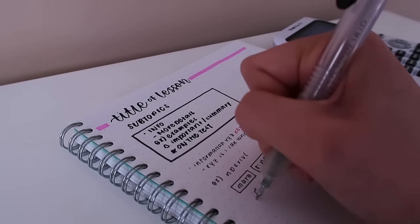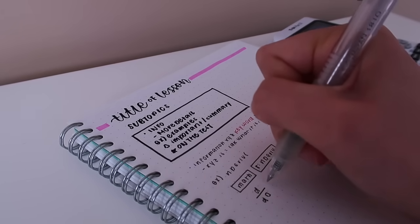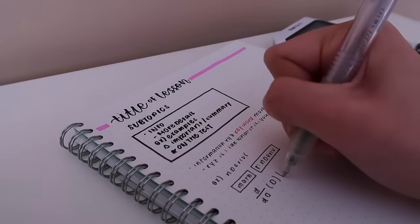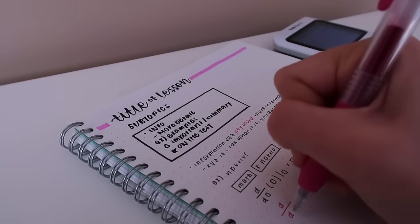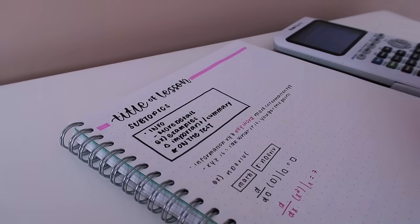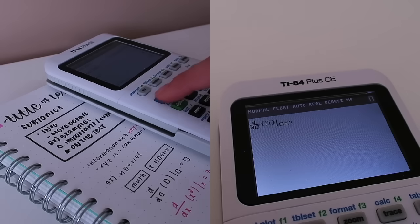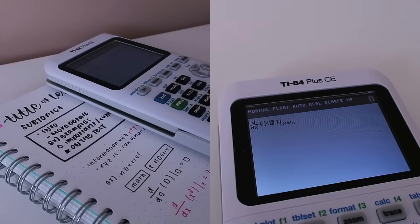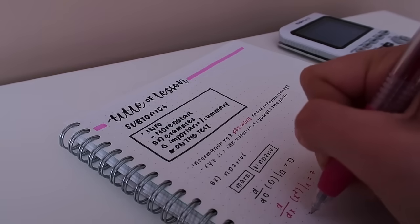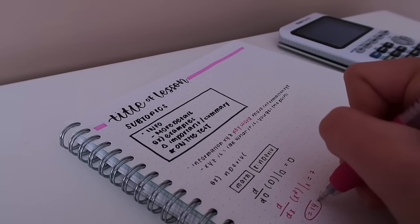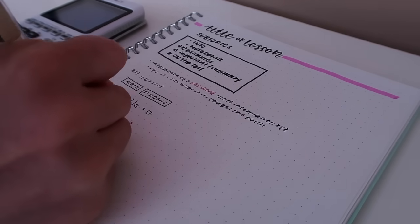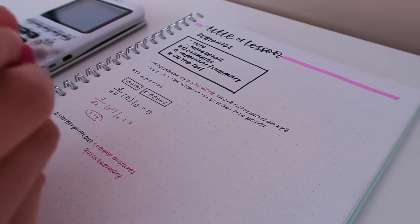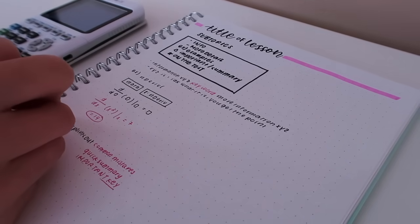At the end of my example I will just underline the answer or draw a circle around it and I try to do the same thing when I'm doing practice problems just to get into the habit of doing it on the exam so it's easier for the marker to distinguish your final answer.